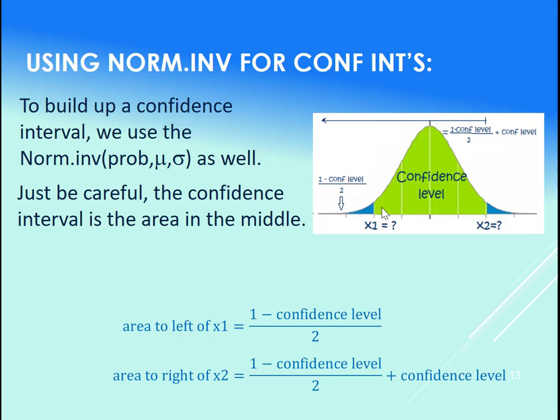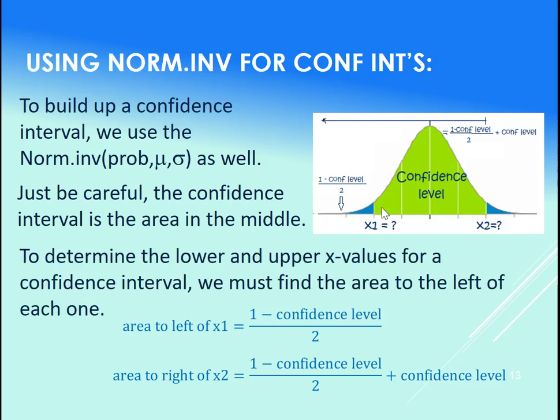So if we want to determine the lower and upper x values here, here are our formulas. The x lower, or the x1 here, the area to the left of it is what we need to plug into the norm.inv. That is 1 minus the confidence level divided by 2.